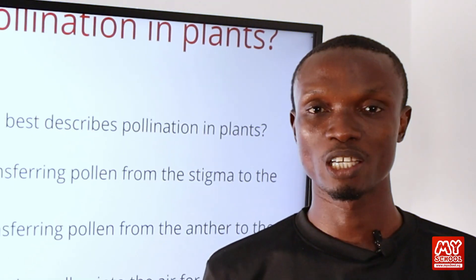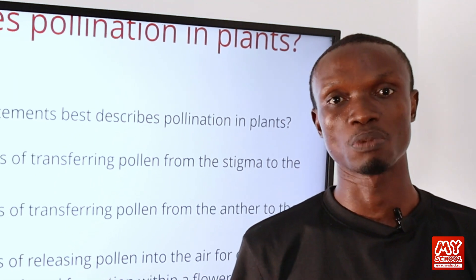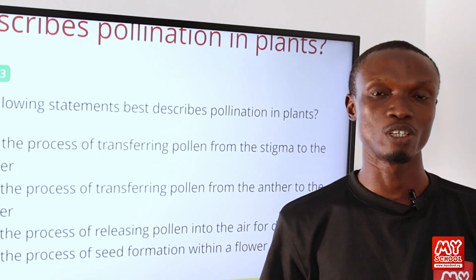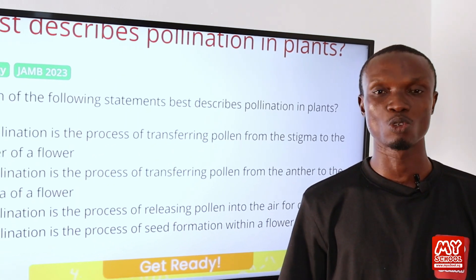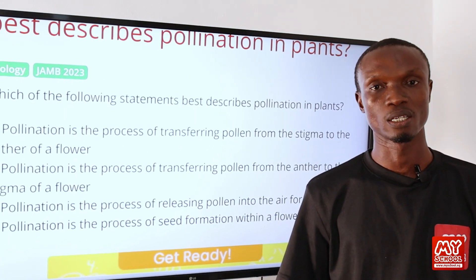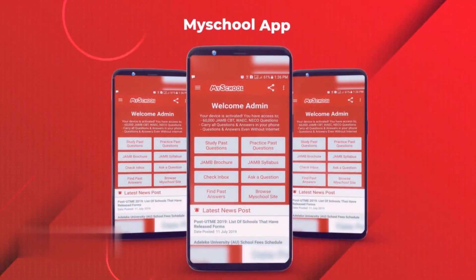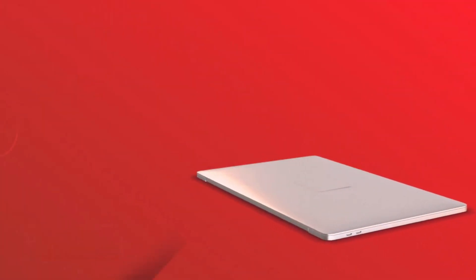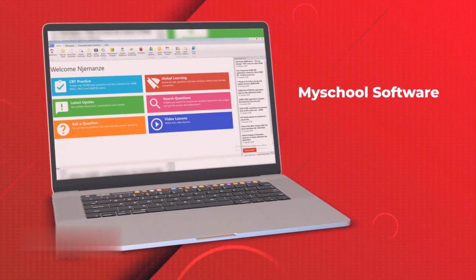Did you know that you can take practice questions with our JAMB-simulated CBT past questions? All you need to do is click on the link in the description below, which will take you to my school website. Download the my school mobile app for Android devices or the my school software for laptops and computers. Please go ahead and start practicing.